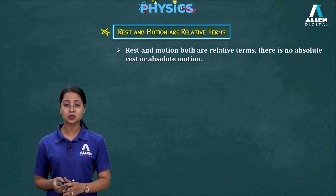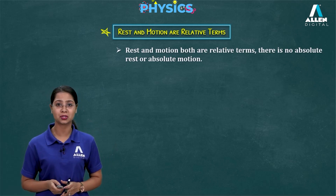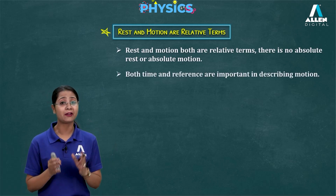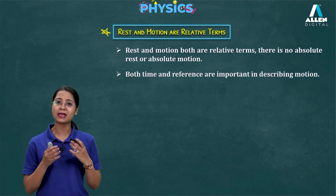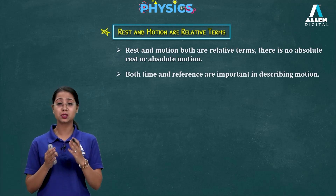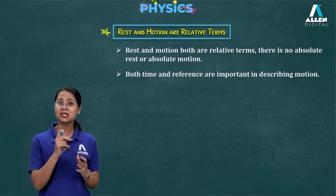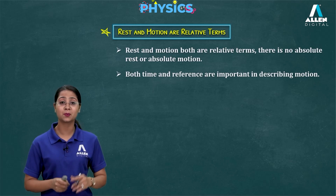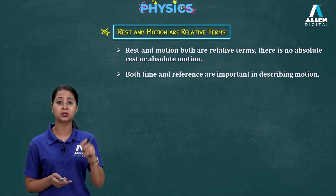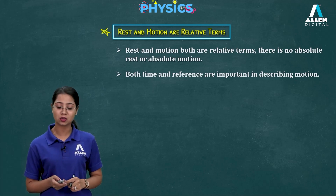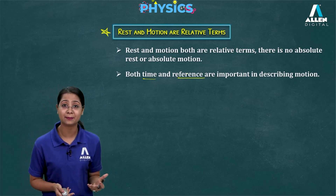That is why we use the term: rest and motion are relative terms. There is no absolute rest or absolute motion. Both reference point and time are important. When you describe the motion of any object, time is very important because you observe the change in position of the object with time. But the reference point is also important because you choose a fixed point to describe the position and motion of any object.